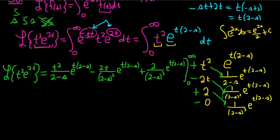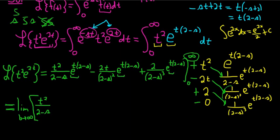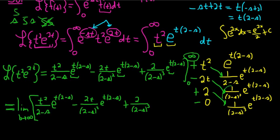Some people like to plug in the infinity symbol, but infinity is not a number, so what we're going to do is replace infinity with the letter b and take the limit as b goes to infinity. So rewriting: the limit as b goes to infinity of t squared over (2 minus s) times e to the t(2 minus s), minus 2t over (2 minus s) squared times e to the t(2 minus s), plus 2 over (2 minus s) cubed times e to the t(2 minus s), evaluated from 0 to b.